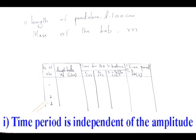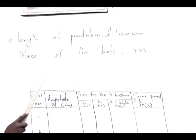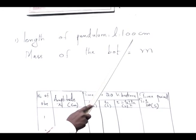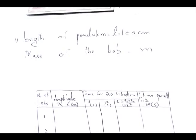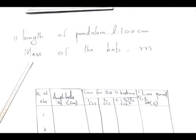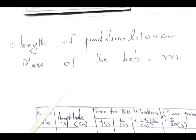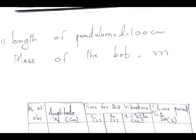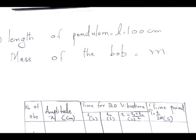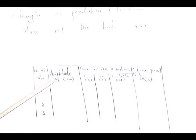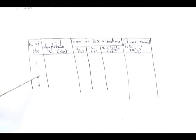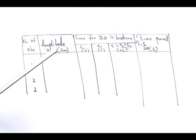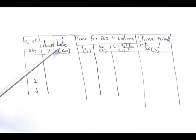To verify the first law, we first find the length of the pendulum, which will be fixed at 100 centimeters. We then select a mass for the bob, which remains fixed throughout this experiment. We follow the observation table: the first column is the number of observations — we record three observations.